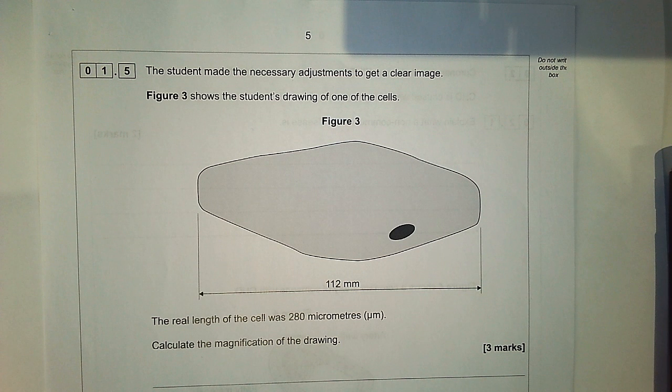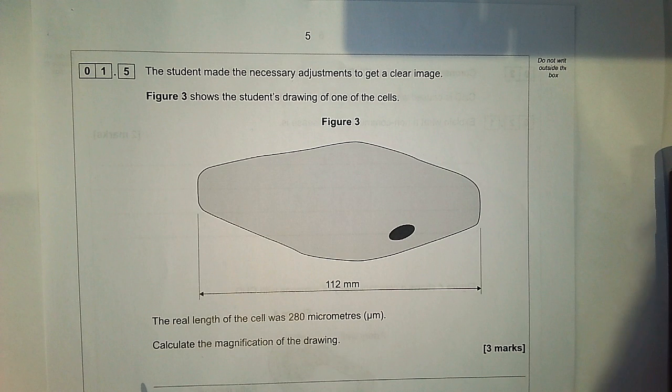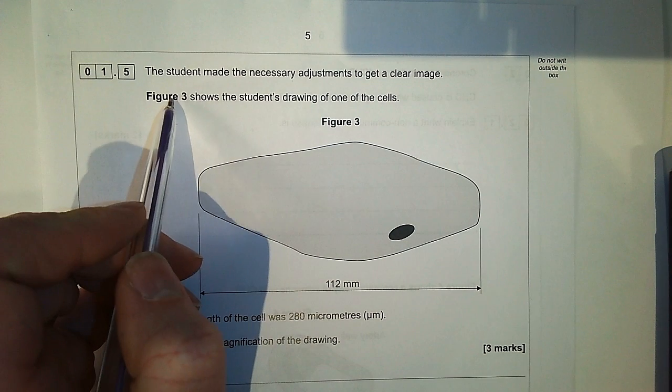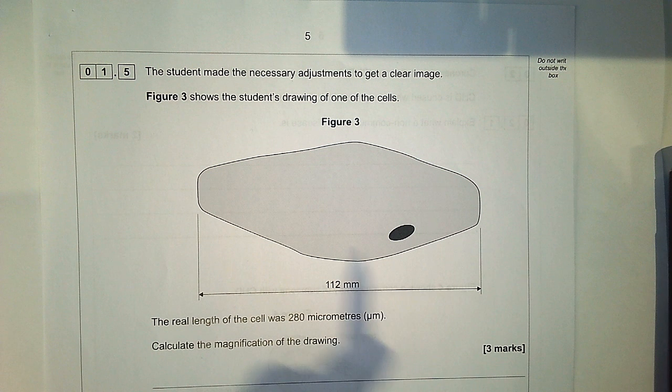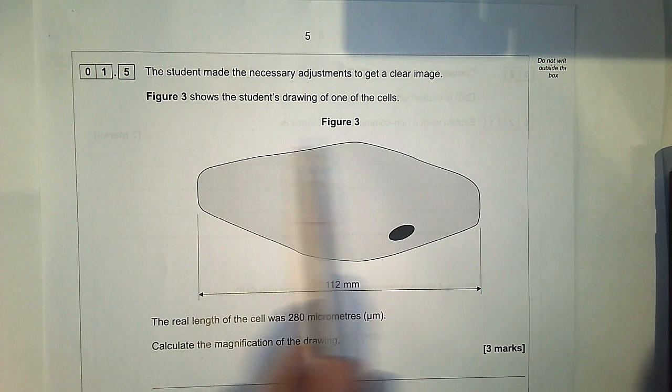This is a GCSE biology exam question about magnification. It says Figure 3 shows the student's drawing of one of the cells. I've got a drawing of a cell.